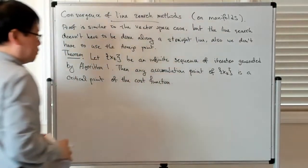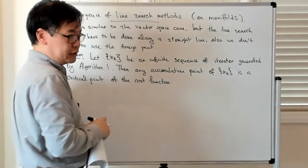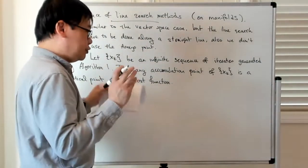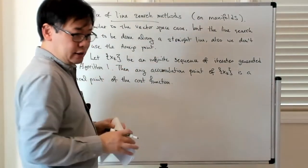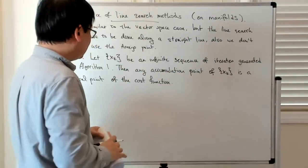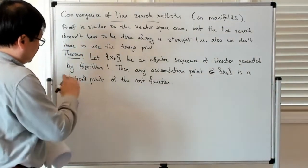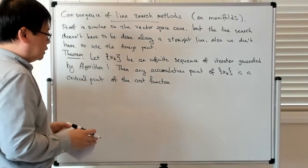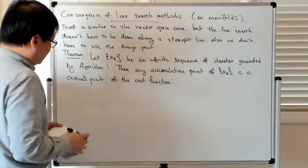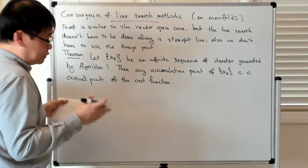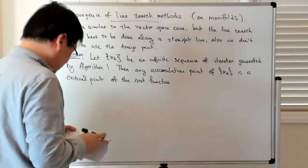So what that means is that if you have this infinite sequence of iterates, and you choose some subsequence and look at the limit of that subsequence — if that limit happens to exist — then that limit is a critical point of the cost function, which basically means that the gradient of the cost function vanishes there.